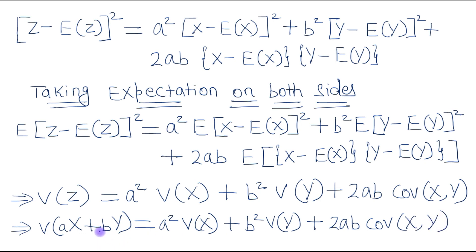So we have proved that the variance of this linear combination of random variables is equal to a squared times variance of x, plus b squared times variance of y, plus 2ab times covariance between x and y.